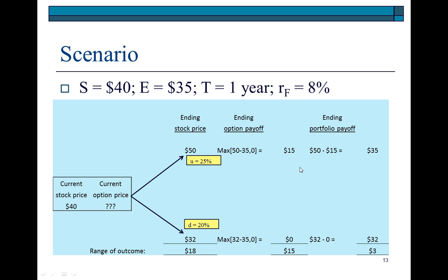The range of outcome is $15. More importantly, if the stock goes up to $50 and the option is in the money, you are going to lose $15, because this $15 is the intrinsic value of the option which the call option holder would enjoy. The value of your hedge portfolio would be $35, which is the value of your stock minus the value of the option. If your stock goes down in value from $40 to $32 and the option is worthless, then your portfolio value is $32. Your hedge portfolio would be equal to $32 minus zero, since the call option expired out of the money. The range of outcome would be $35 minus $32, which is $3.